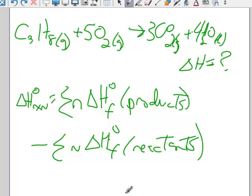You want me to actually put numbers in. Delta H for carbon dioxide gas is negative 393.5. So that's 3 times negative 393.5 plus 4 times the heat of formation of water liquid, negative 285.83.